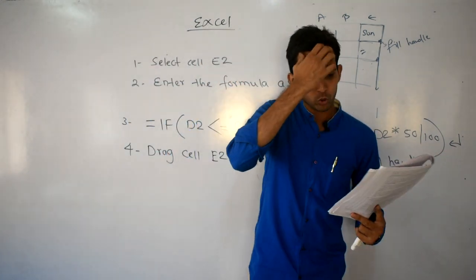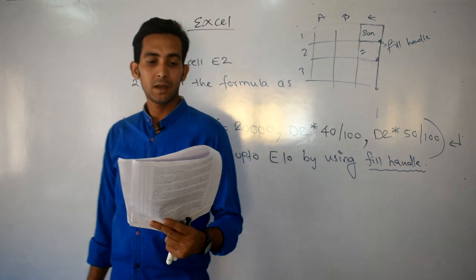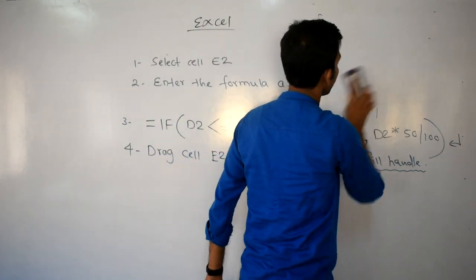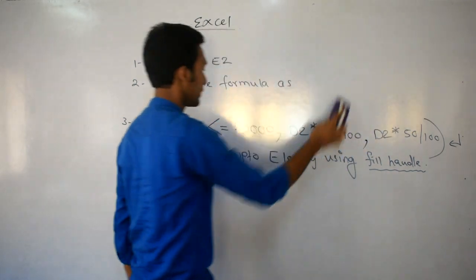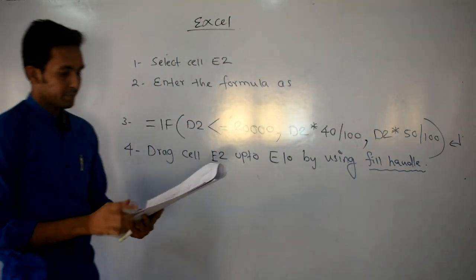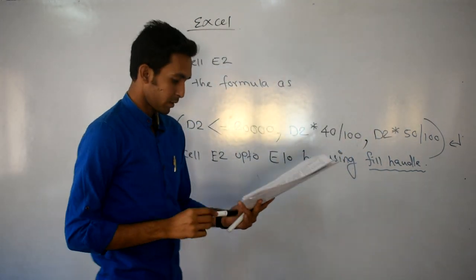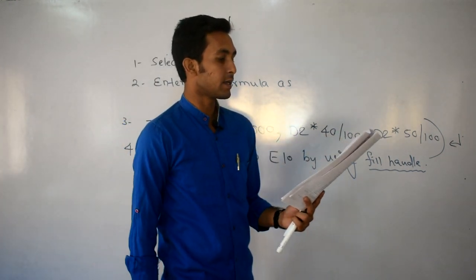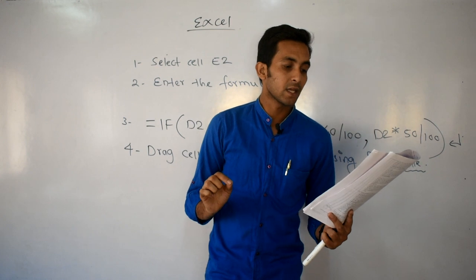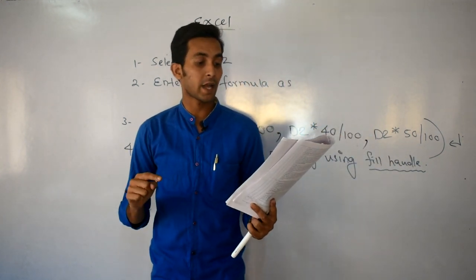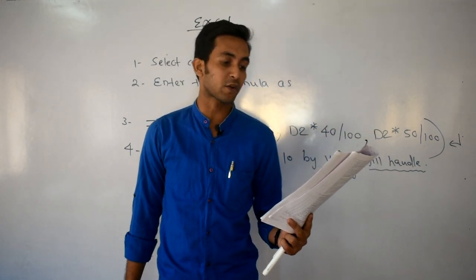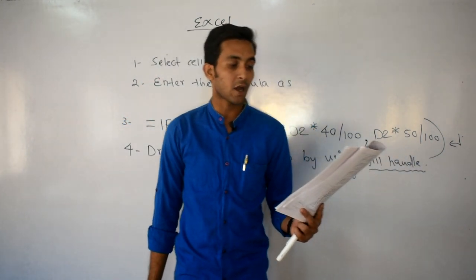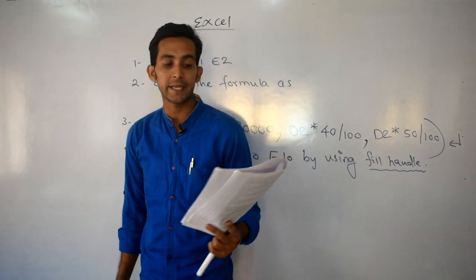वहाँ पर दूसरा भी question दिया हुआ है। दूसरा question: Find the allowance at the rate of 15% of salary for salary above 25,000; otherwise 10% of salary — in column F.